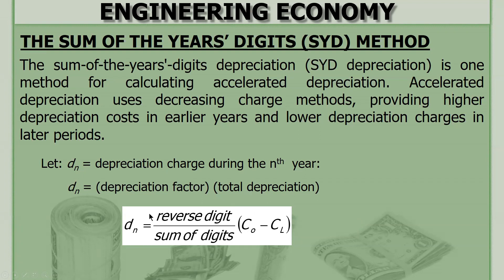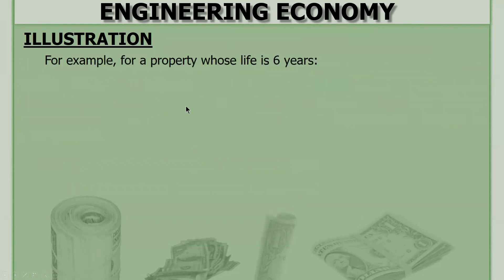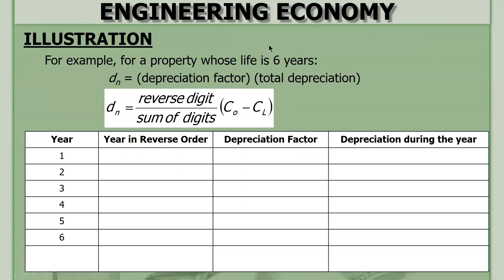What is this reverse digit? Let's use an illustration. For example, for a property whose life is six years, let's construct a table. The years are one, two, three, four, five, six. First, you get the sum of the digits — simply add: one plus two plus three plus four plus five plus six, that's twenty-one. So the reverse digit is the year in reverse order — instead of one to six, you start with six: six, five, four, three, two, one.